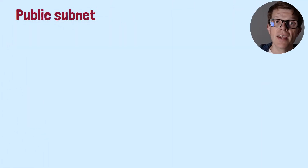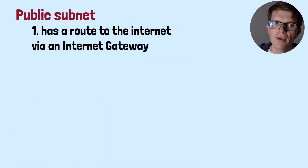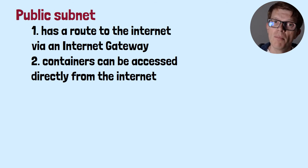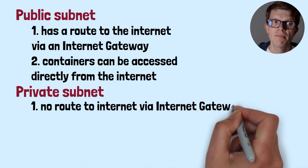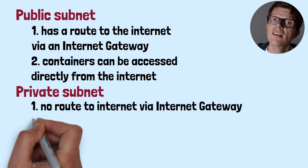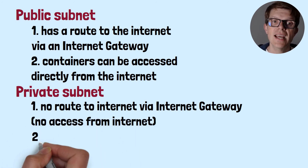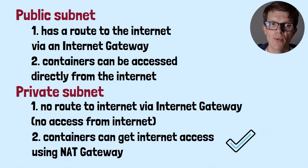To summarize public versus private subnets: a public subnet has a route to the internet via an internet gateway, meaning containers deployed there have internet access and can be accessed directly from the internet, as long as they're assigned a public IP address. A private subnet doesn't have a route to the internet via an internet gateway, so containers there cannot be accessed directly from the internet. However, containers can be provided with internet access from a private subnet by attaching a NAT gateway to that subnet.